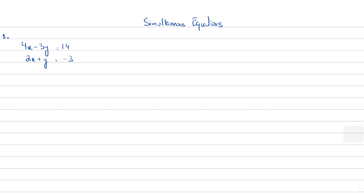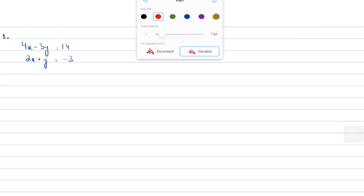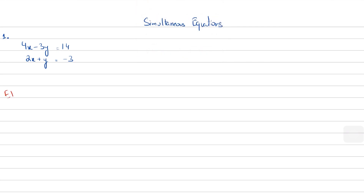In this video I'm going to show you how to solve two equations simultaneously with the help of a method called elimination. As the word elimination suggests, what we do is eliminate any one variable. So the objective here is to eliminate any one of the two variables.